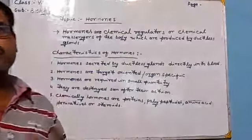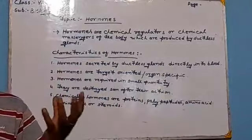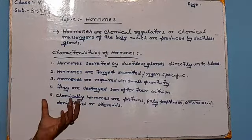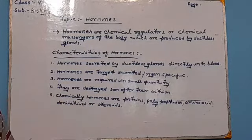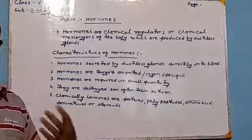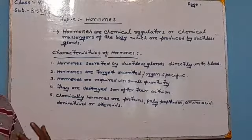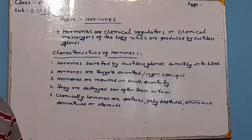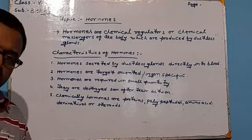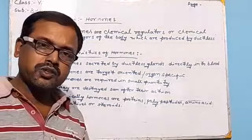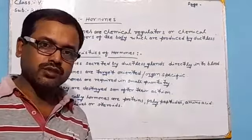That is why hormones are called target-oriented or organ-specific. The third characteristic feature is that hormones are required in very small quantities. The fourth characteristic feature is that hormones are destroyed or get denatured soon after their action on the target organs. Once they act on the target organ, they are quickly destroyed or denatured.